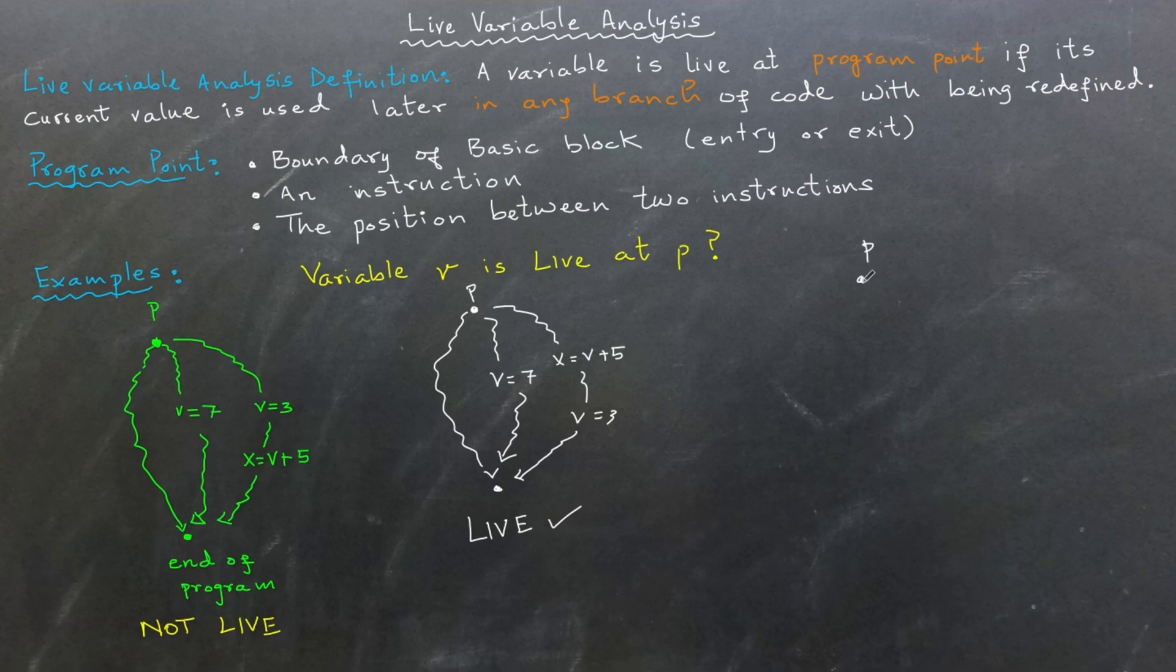Finally, in the last example, we have a single branch with the instruction V equals to V plus three. This makes V live at P because we first read V's value before overwriting it. I hope these examples clarify what is meant by a live variable.